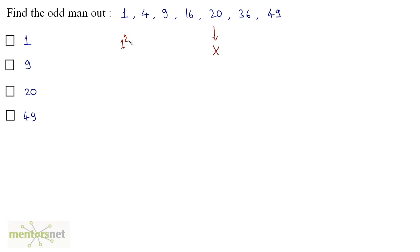1 can be written as 1 square. 4 can be written as 2 square. This is 3 square, 4 square. 20 cannot be represented in terms of squares. It is not a perfect square. 36 is 6 square and 49 is 7 square. So 20 is the odd man out.